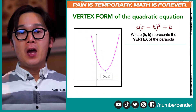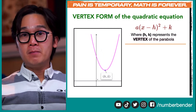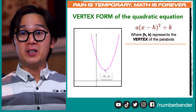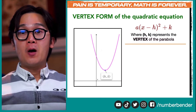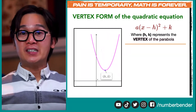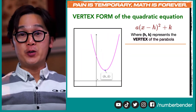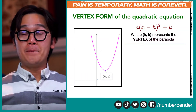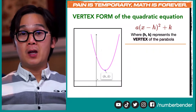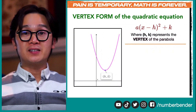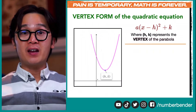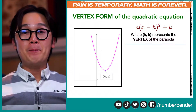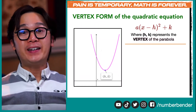In this particular equation, we're going to be using the vertex form of our quadratic equation given by a quantity x minus h squared plus k, wherein hk represents the vertex of our parabola. You're seeing the parabola in this particular general form opening upward, with the vertex at hk. To identify the vertex, always keep in mind that it's the opposite of h and k.